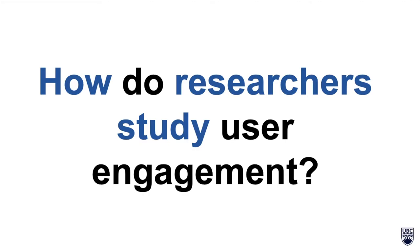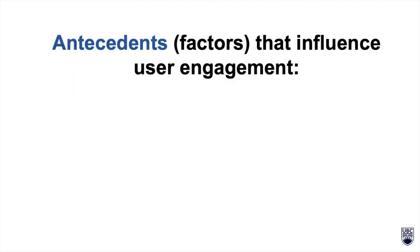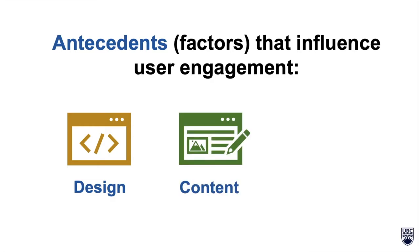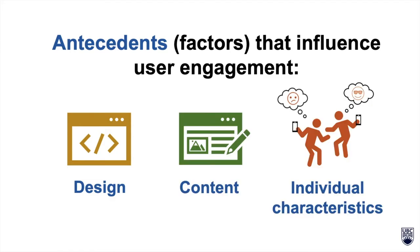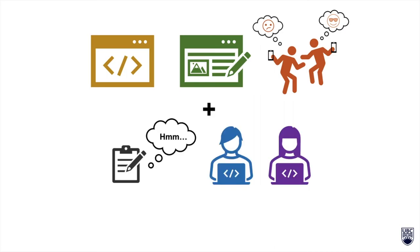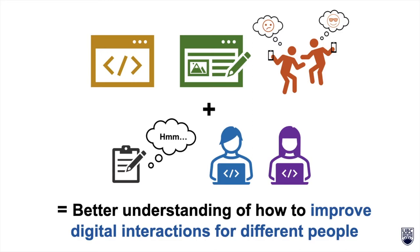How do researchers study user engagement? Researchers explore and test different antecedents or factors that influence user engagement. These include a digital system's design or appearance, content or the information that's being shared, and users' individual characteristics such as how familiar a user is with a certain platform. By exploring and testing different antecedents and analyzing users' interactions with digital systems, researchers can better understand how to improve digital interactions for different people.